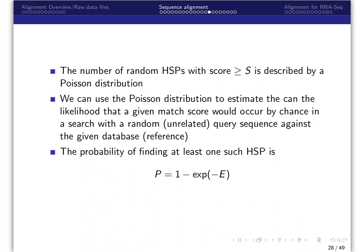The number of random high-scoring segment pairs with a score greater than or equal to S is described by a Poisson distribution. We can use the Poisson distribution to estimate the likelihood that a given matched score would occur by chance in a search with random or unrelated query sequence against the given reference database. The probability of finding at least one such high-scoring segment pair is 1 minus the exponentiate of the negative E value. This is the P value associated with the score S.